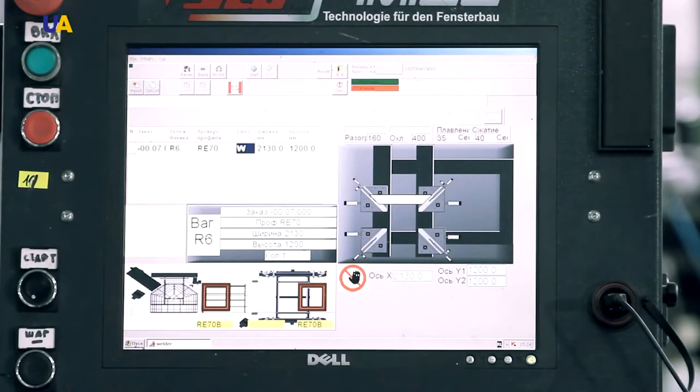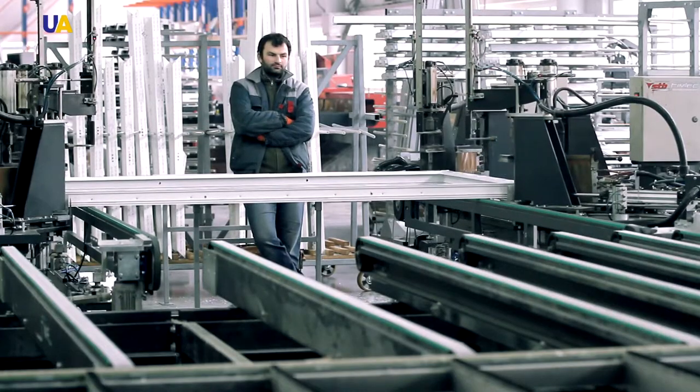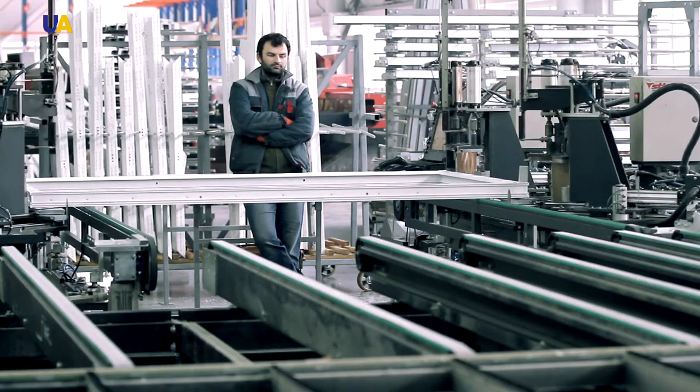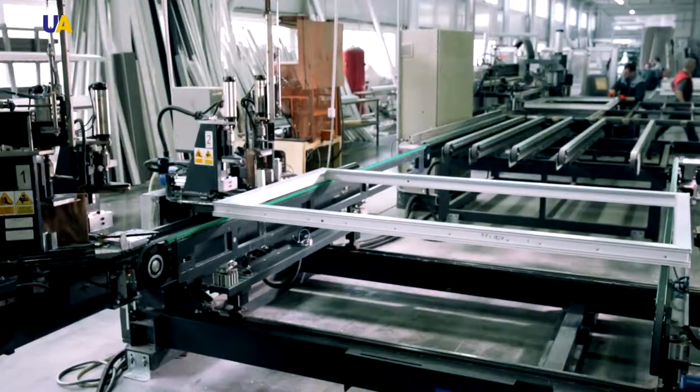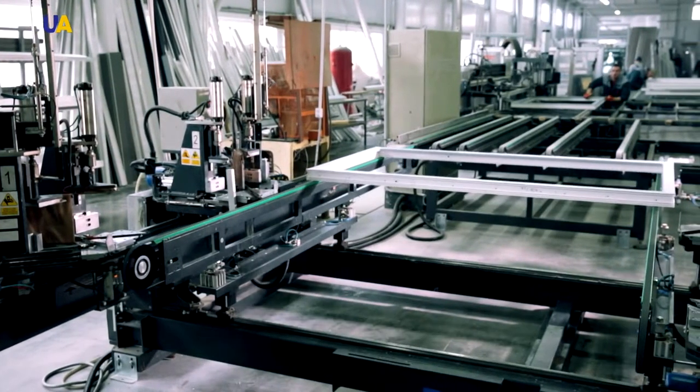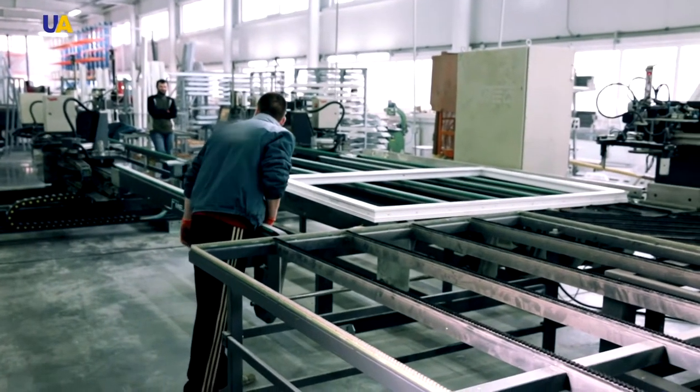Welding mirrors with a temperature of 250 degrees are wrapped with a special Teflon film. This process ensures the preservation of the profile and protects it from baking or sticking. After welding, the workpiece goes to the cooling station. There, it takes about one and a half minutes to stand before it is swept.